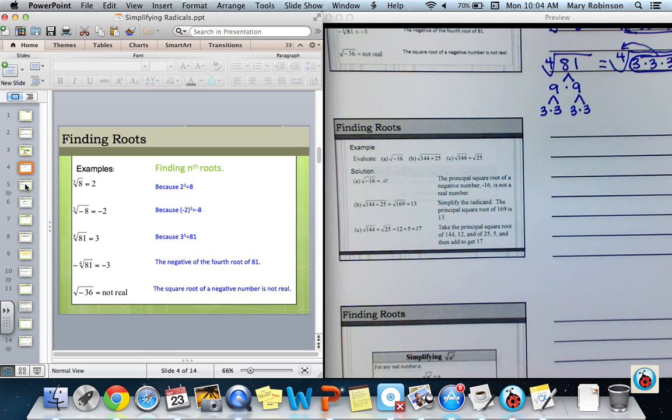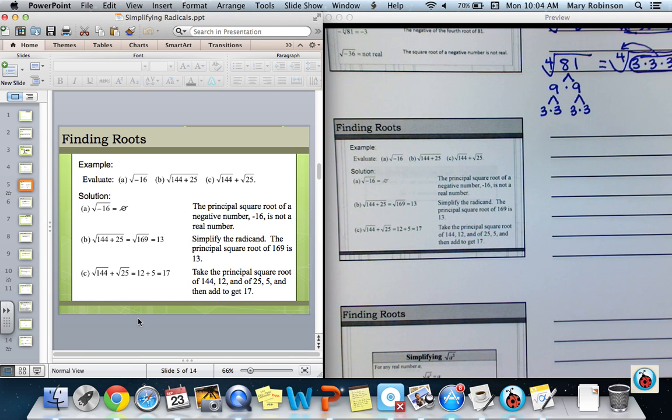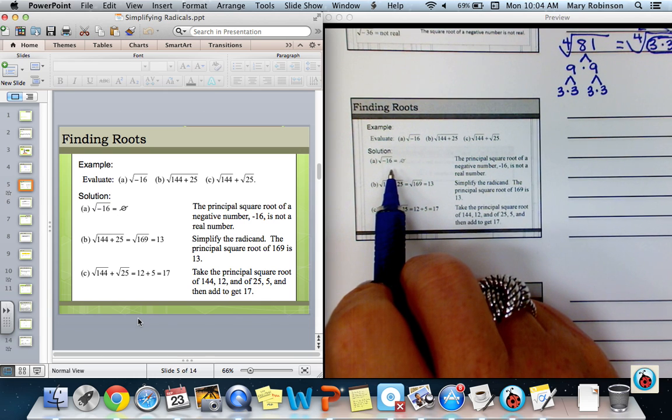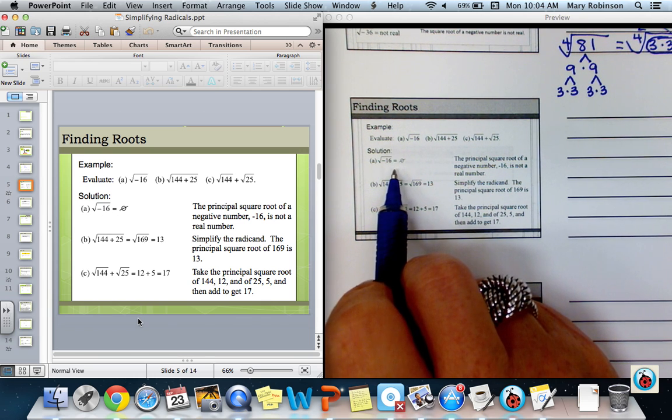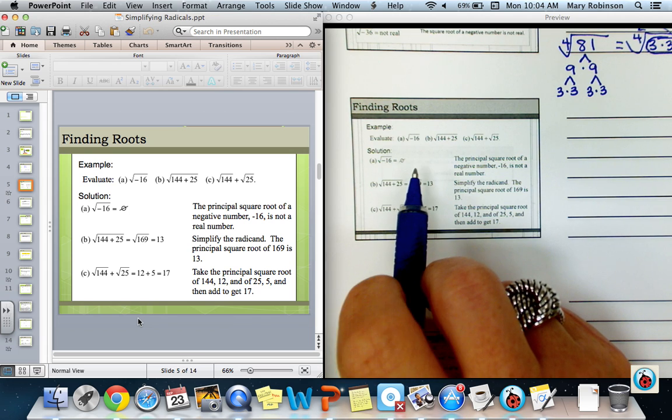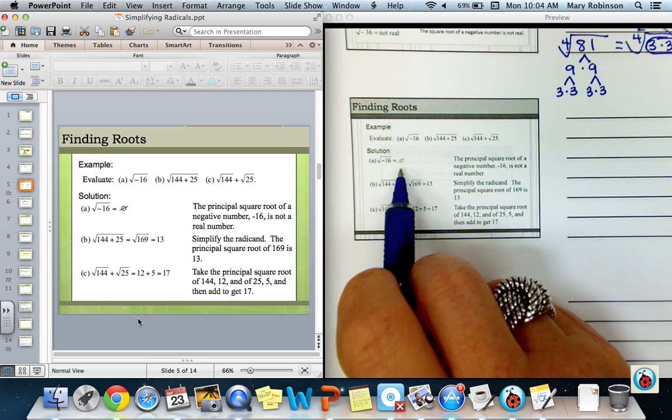So next, let's move on to practicing finding these roots. For A, when we are looking at the square root of negative 16, remember we just said that the principal square root of a negative number is not real. So this is an empty set or no solution symbol.